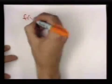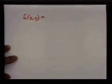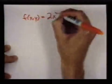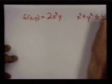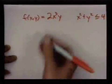So the original function was 2x³ times y and the constraint was this. To find critical points we find the partial derivatives.